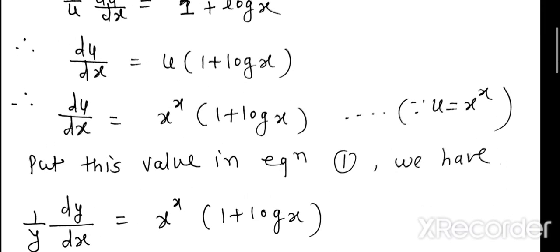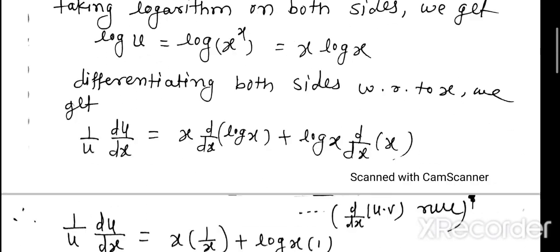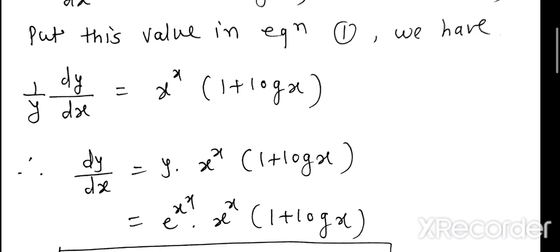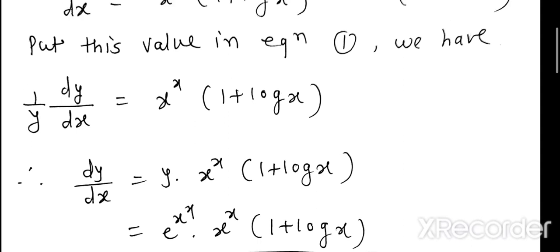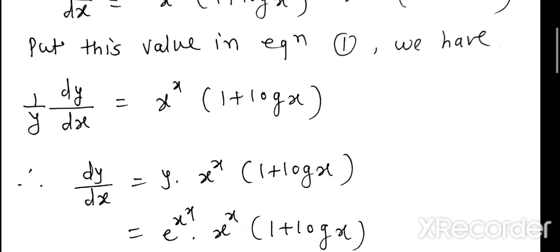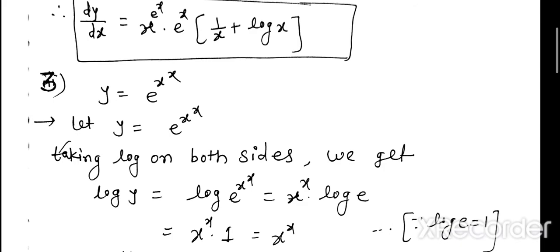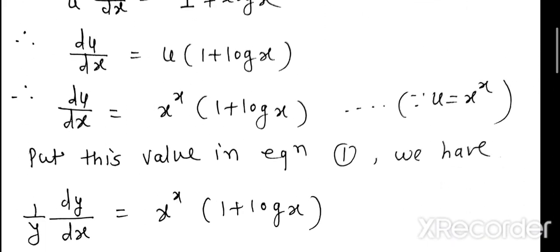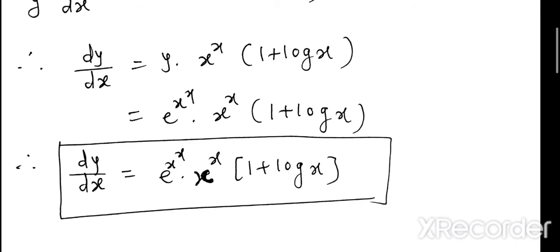Putting this value in equation 1: 1/y · dy/dx equals x^x·(1 + log x). So dy/dx equals y · x^x · (1 + log x). Substituting y equals e^(x^x), our final answer is dy/dx equals e^(x^x) · x^x · (1 + log x).